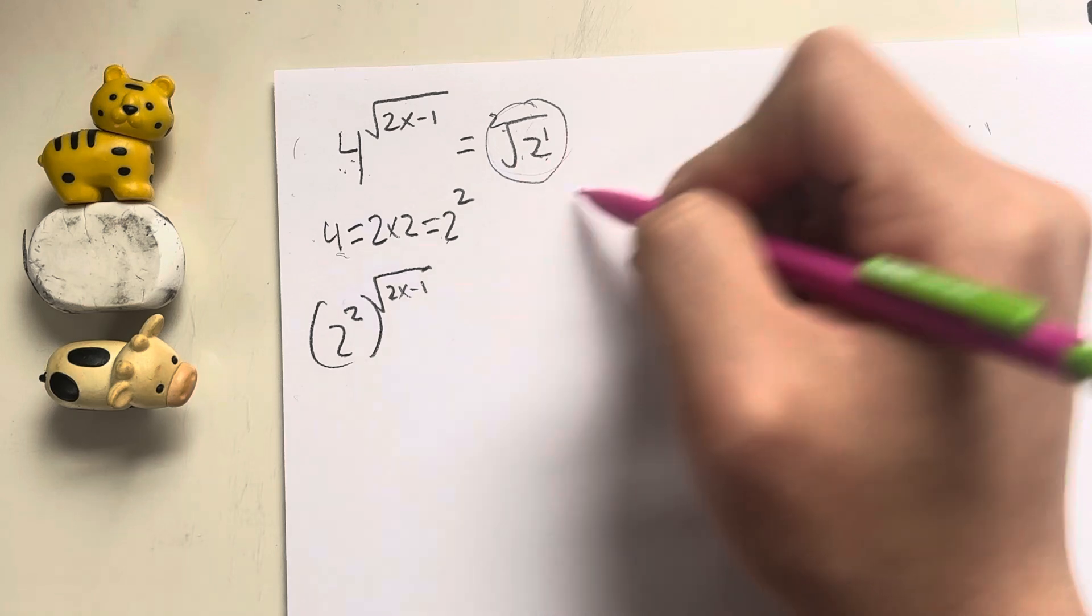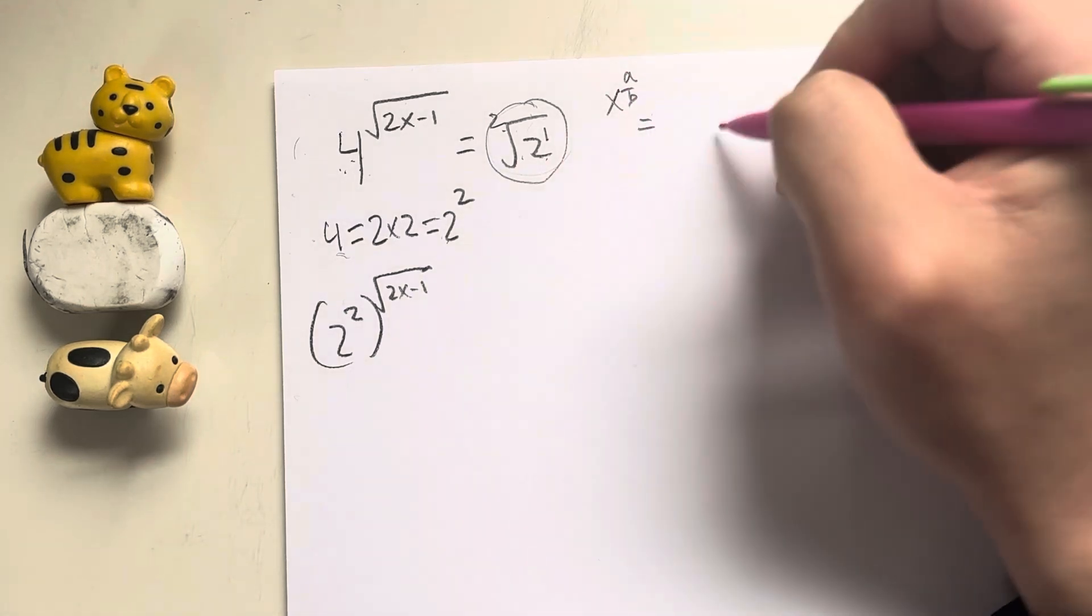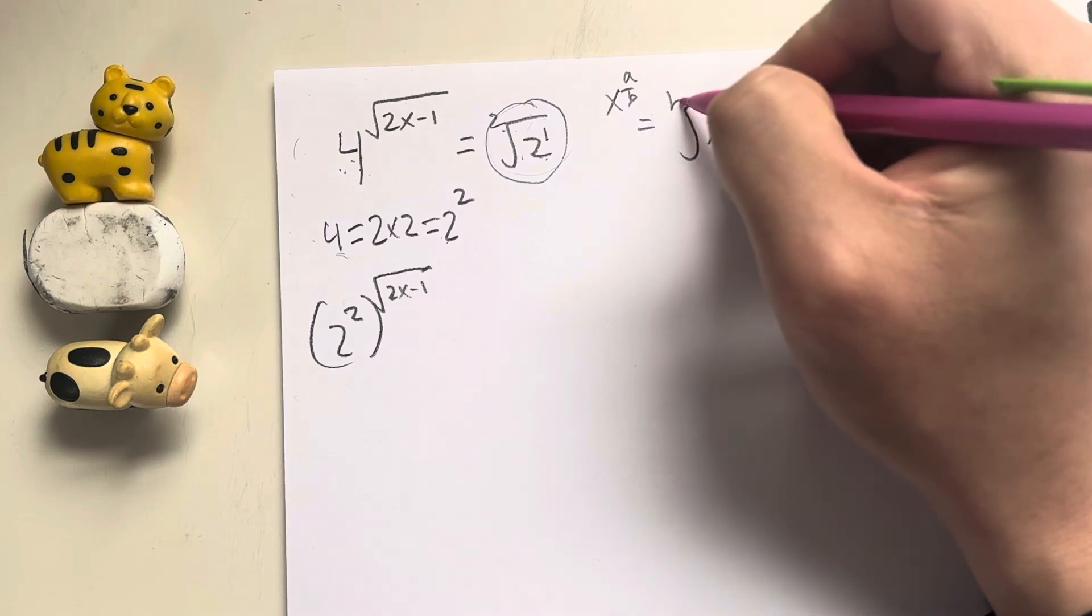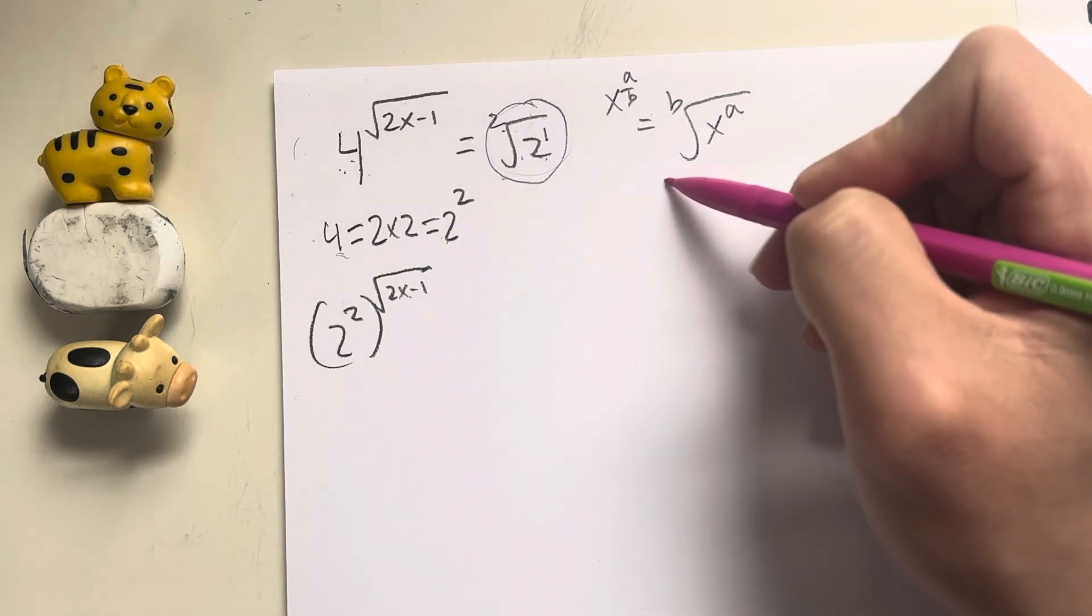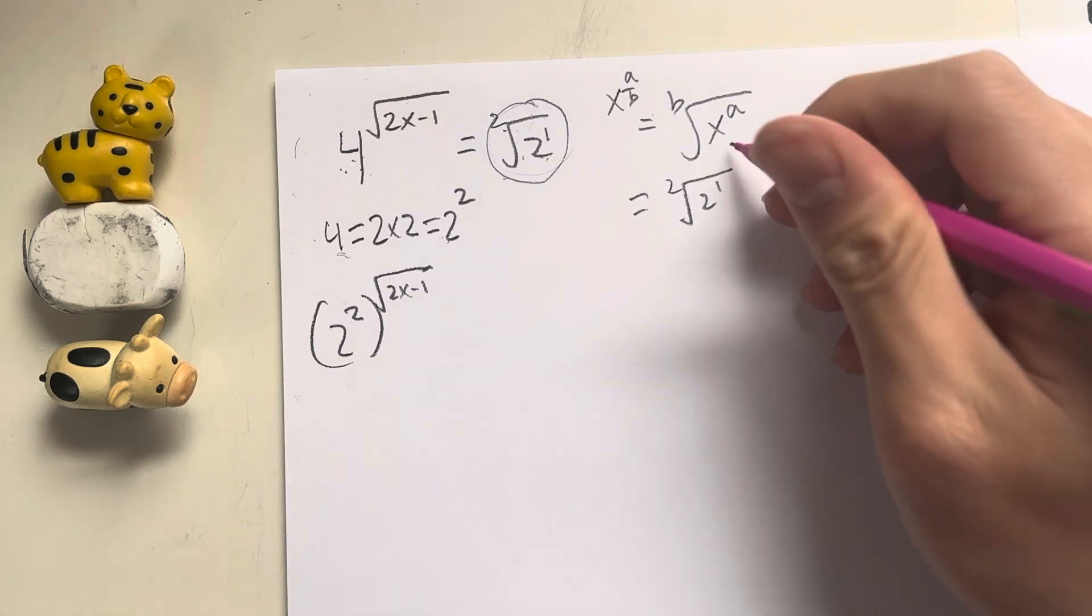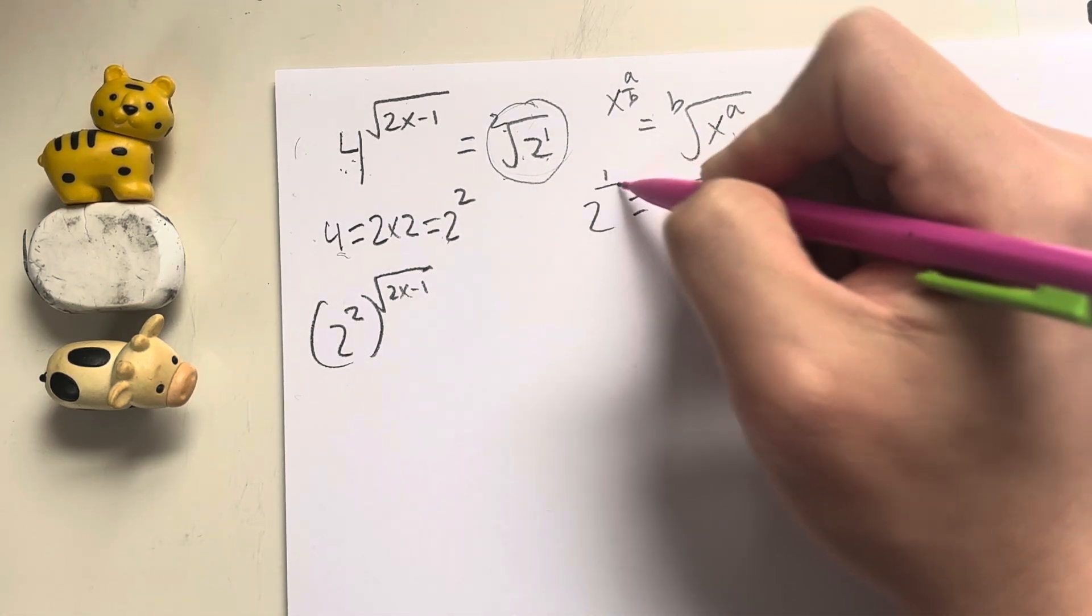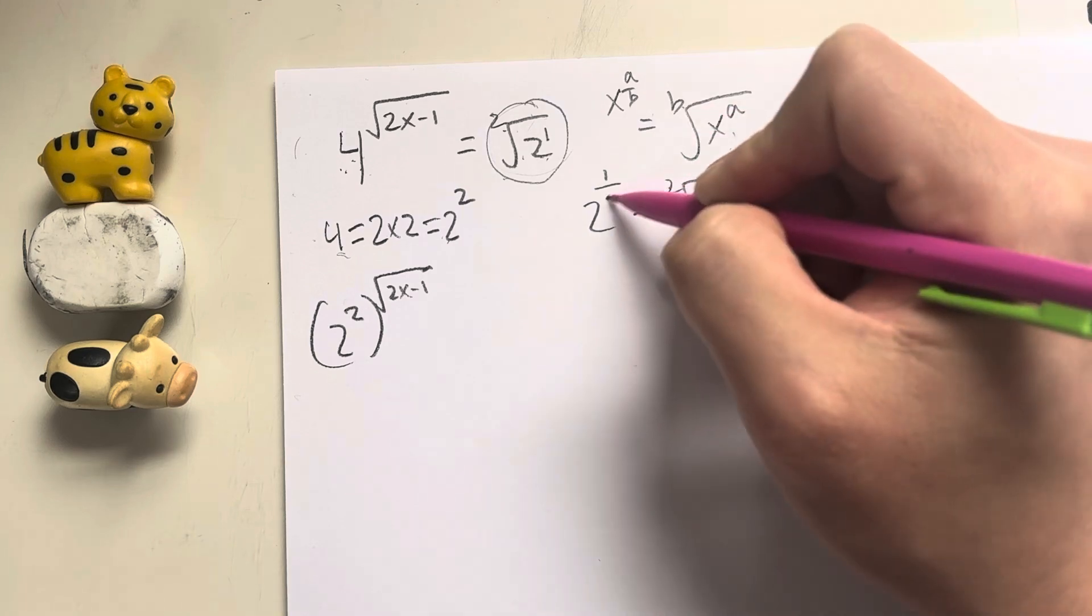And we have to remember this exponential rule, where x to the a over b is simply just equal to x to the a root b. So rewriting the square root of 2 to the first, this is technically equal to x, which is our 2, to the a, which is 1, over our b value, which is 2.